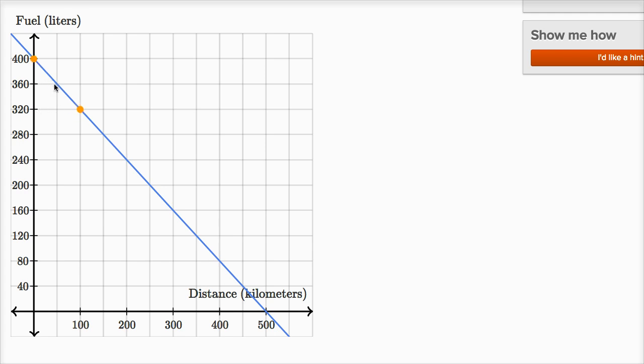And just like that, we have plotted the line that shows how much fuel he has in his tank as a function of distance traveled. And you can even see from this, that he's going to run out of fuel at the 500 kilometer mark.